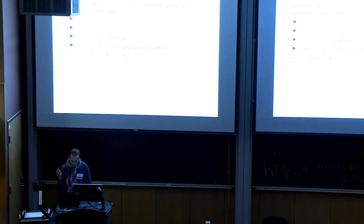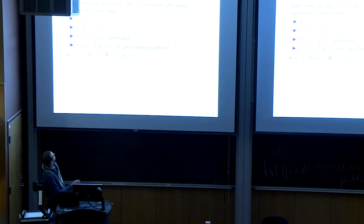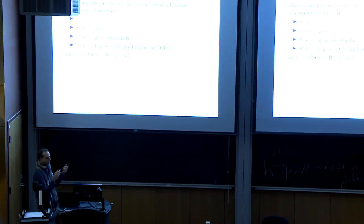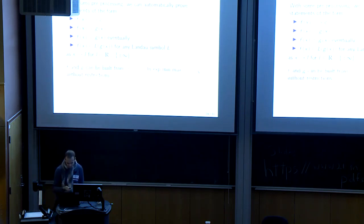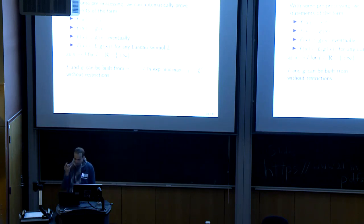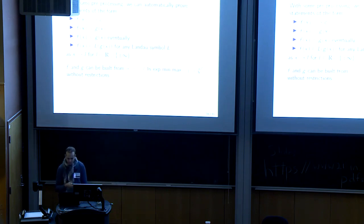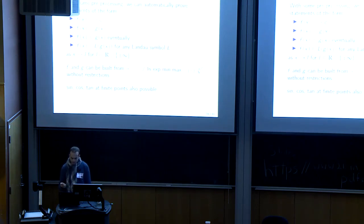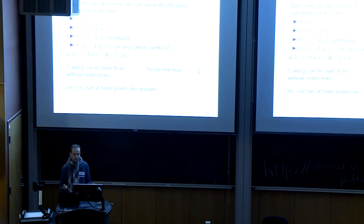After some preprocessing and ML code, the end result is a proof method that can automatically prove statements of this form: limits, asymptotic equivalences, eventually-greater-than relations (for x large enough or x close enough to some point), big-O, little-o, and big-Theta — the Landau symbols. The functions f and g can be built from all basic arithmetic operations: log, exponential, minimum, maximum, absolute value, powers, roots, without restrictions. There is some support for sine, cosine, and tangent, but only when the argument doesn't go to infinity — because when it does, you get oscillation and there's no multi-series expansion.